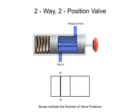The input port is typically labeled P for pressure. Outlet ports are typically given alpha characters starting with A. Other times, the letter stands for the destination of the fluid. For instance, the letter T would indicate a port that is connected to a tank. This is a fairly simple valve, so port labels are not required.